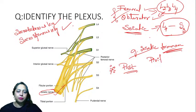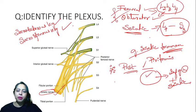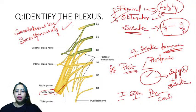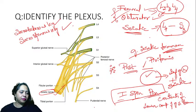The piriformis muscle divides the greater sciatic foramen into two compartments — above and below. Below the piriformis passes the inferior gluteal nerve along with the sciatic nerve. You can remember all the contents of the lower compartment with the mnemonic 'ICE PIN PIN'.